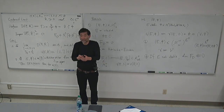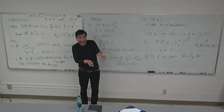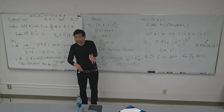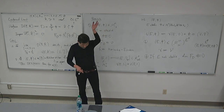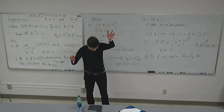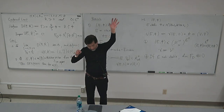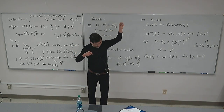Then of course the Hermite-Einstein metric cannot find us. Therefore the equation becomes unstable. And then the bubbling has to be controlled. But that's analysis.